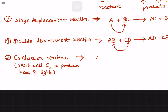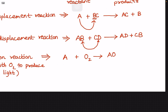The general formula for combustion is: A plus O plus energy gives the products. The general formula uses A and O.